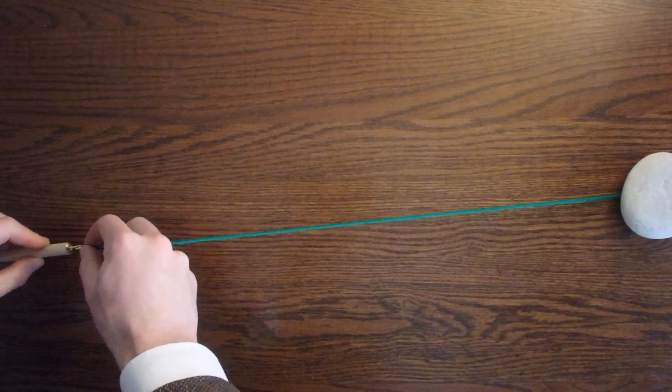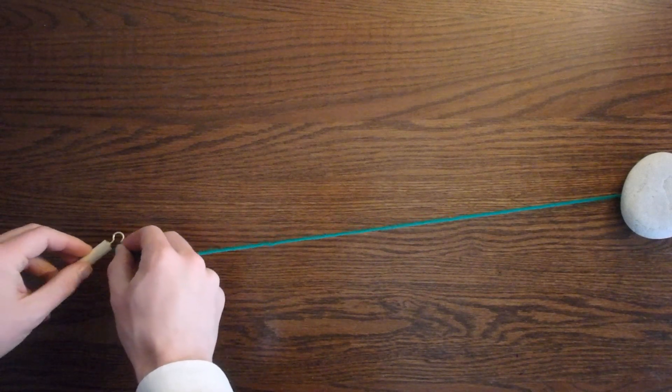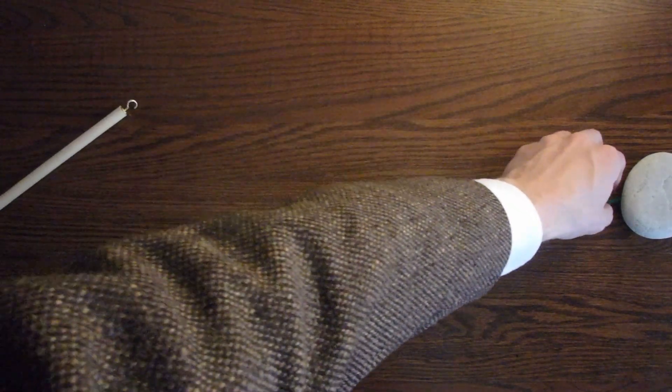When it looks like you've got enough tension, fold the chord in half. Be careful not to let the tension go on either side of the chord.